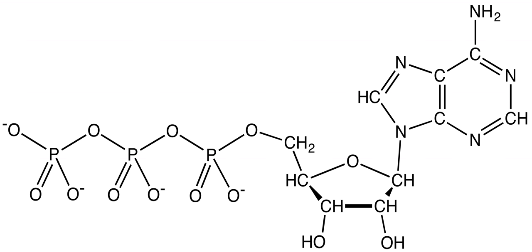The pyruvate generated as an end product of glycolysis is a substrate for the Krebs cycle. Glycolysis is viewed as consisting of two phases with five steps each.